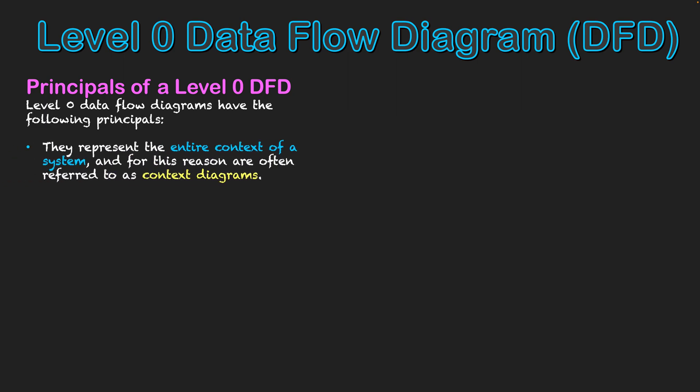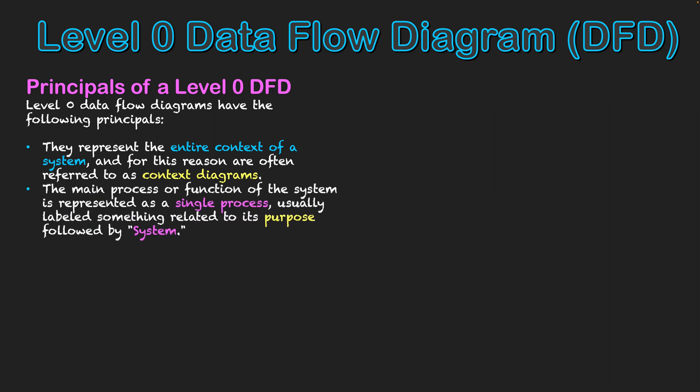So let's now look at some of the principles related to a Level 0 DFD. Firstly, they are used to represent the context of a system, and hence why they're called context diagrams. They give us an overview of the system's context and purpose in a simple format. Secondly, the main processes or function of the system are represented as the single process. We only have one circle and usually we name that circle something related to the system's purpose followed by system. So if it's about a video streaming service, I might call it video streaming system.